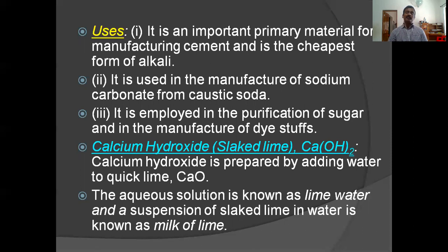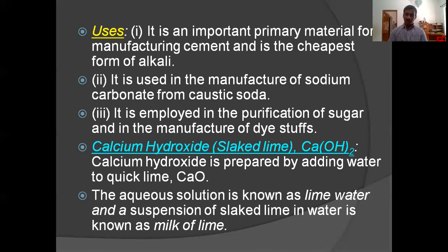Calcium hydroxide or slaked lime, Ca(OH)2, is prepared by adding water to quicklime CaO. The aqueous solution is known as lime water, and a suspension of slaked lime in water is known as milk of lime.